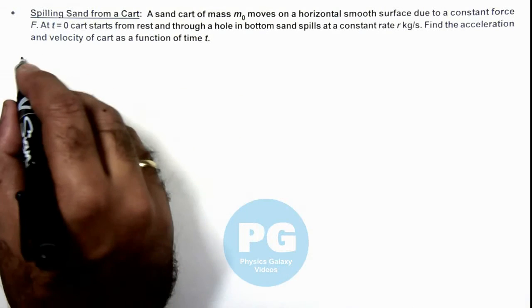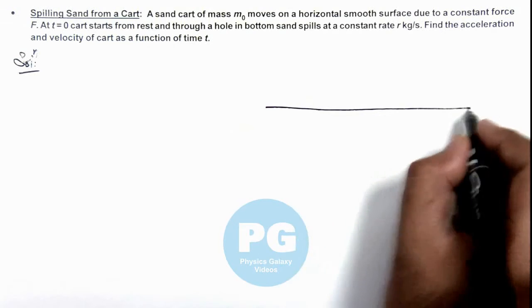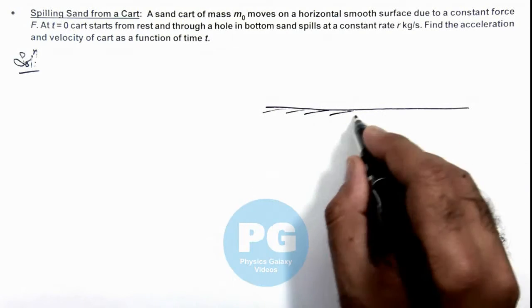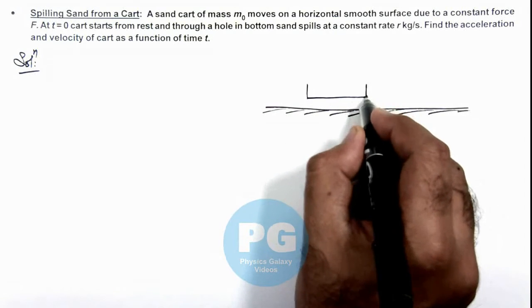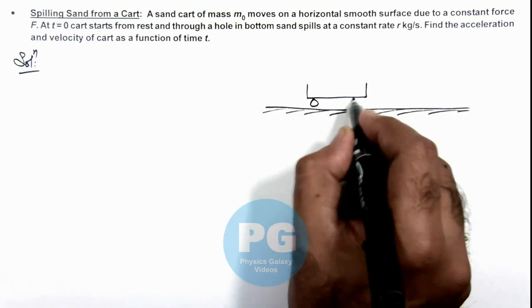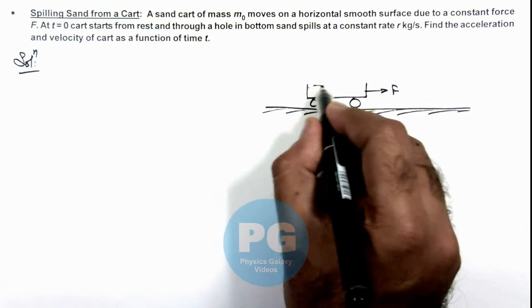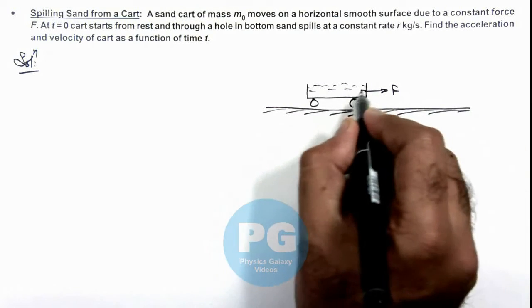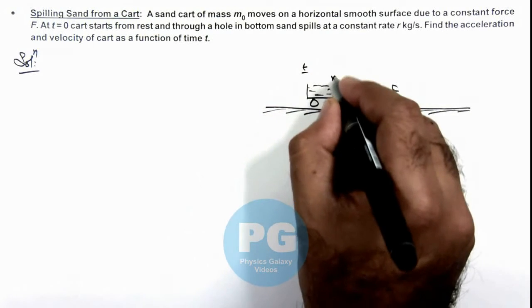Here, we can draw the situation for better clarity. On the ground, this is a cart which is being pulled with a force F, and it is having sand. At any time t, its mass is taken as m.